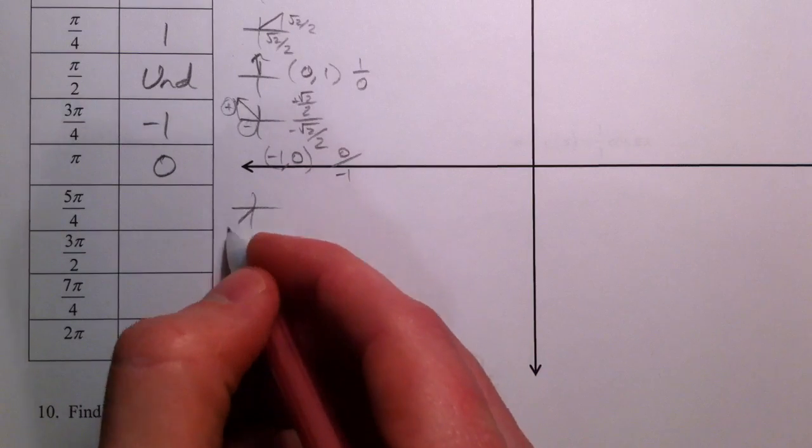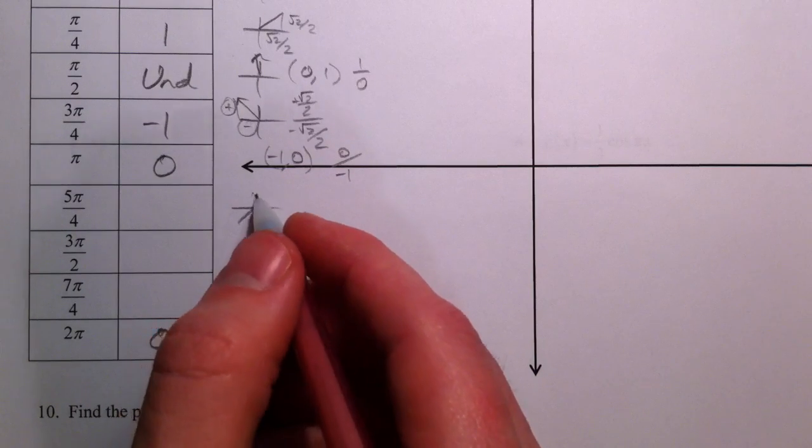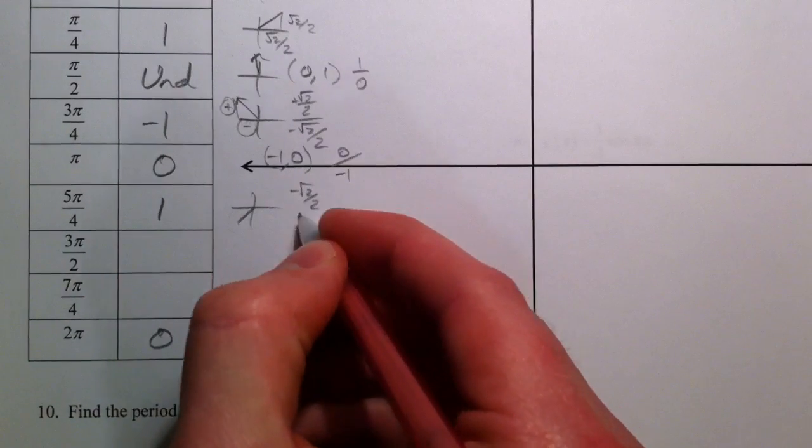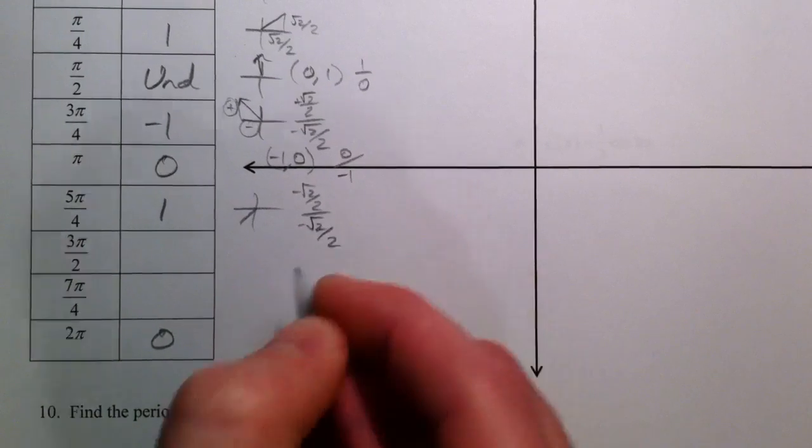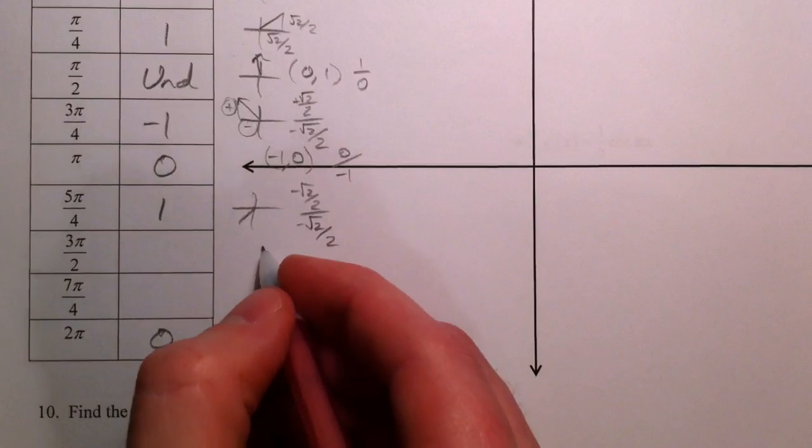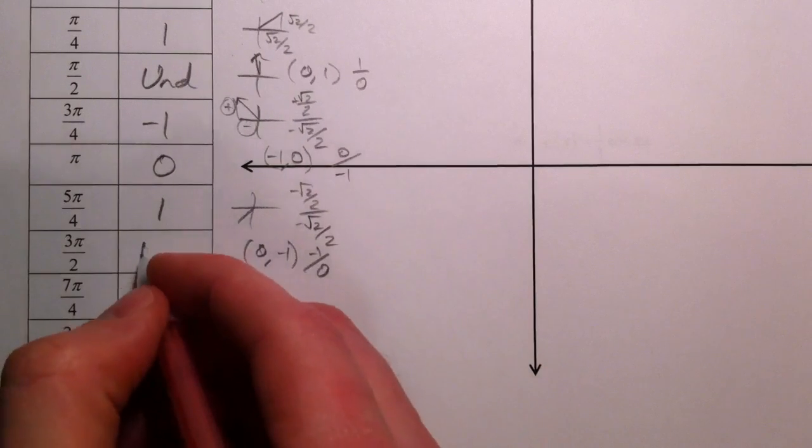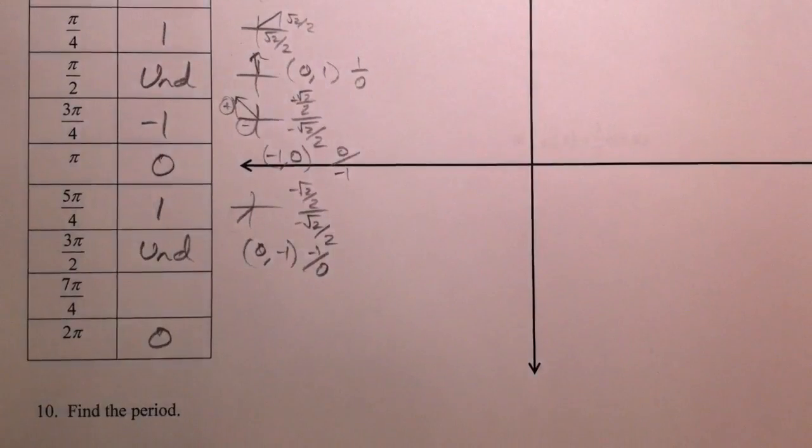Down in the third quadrant, negative divided by negative, same numbers. So that's a positive 1, negative root 2 over 2 divided by negative root 2 over 2. And 3pi over 2, 0 comma negative 1. Negative 1 over 0 is undefined. We get another asymptote there.